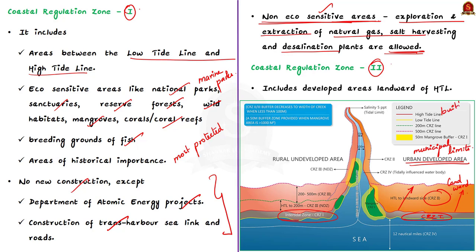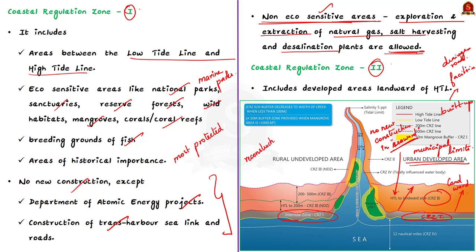These developed areas have already been provided with drainage, approach roads, and other infrastructural facilities such as water supply, sewerage, etc. In CRZ 2, no new construction shall be made on the seaward side — that is, towards the sea. Reconstruction of authorized buildings will be permitted only if it adheres to FSI norms, where FSI stands for floor space index. That is all about CRZ 2.